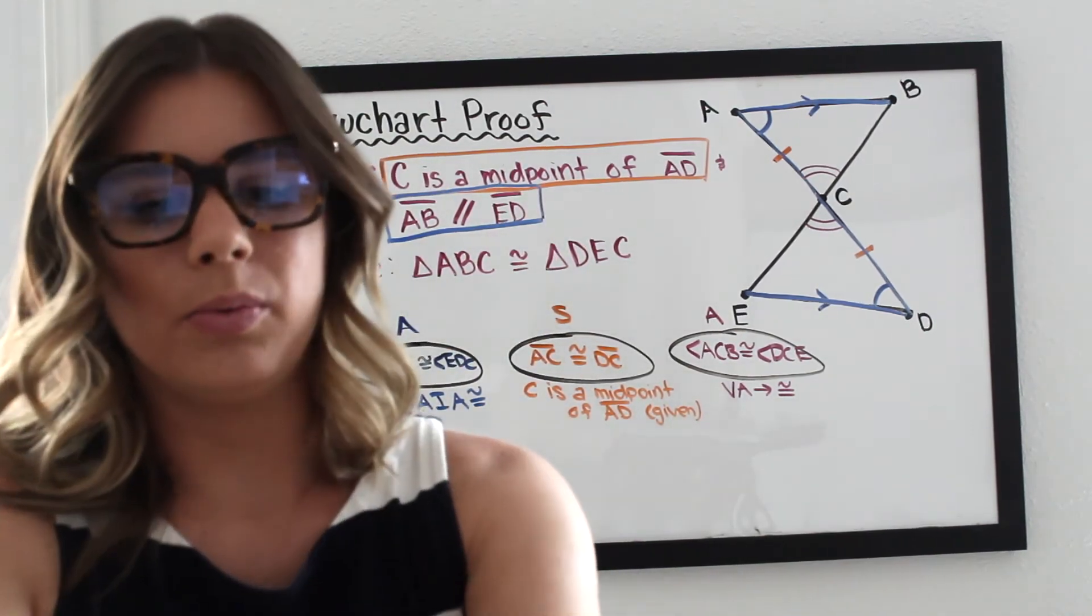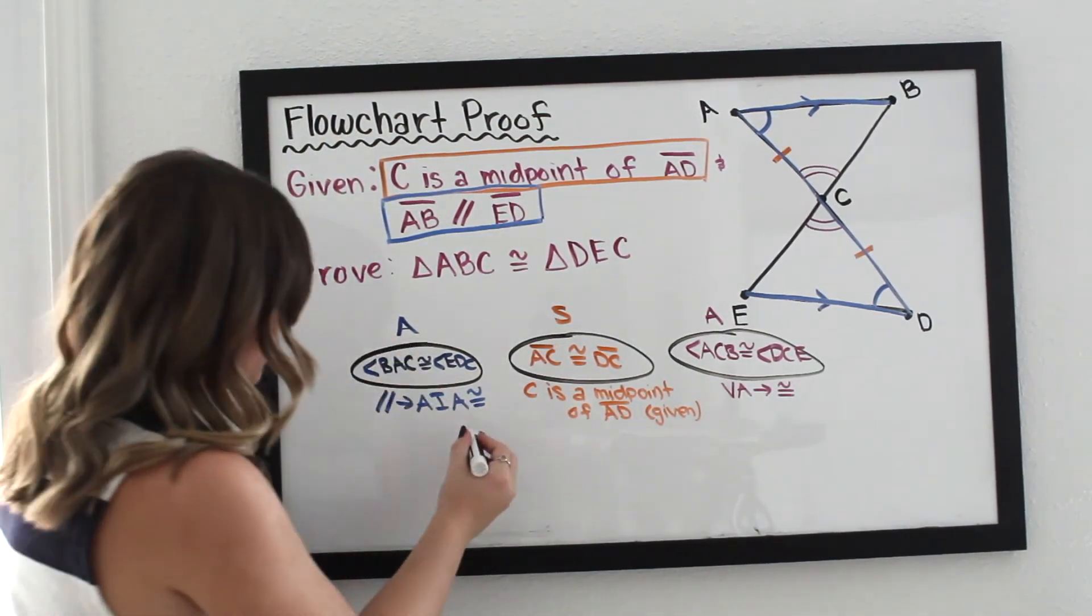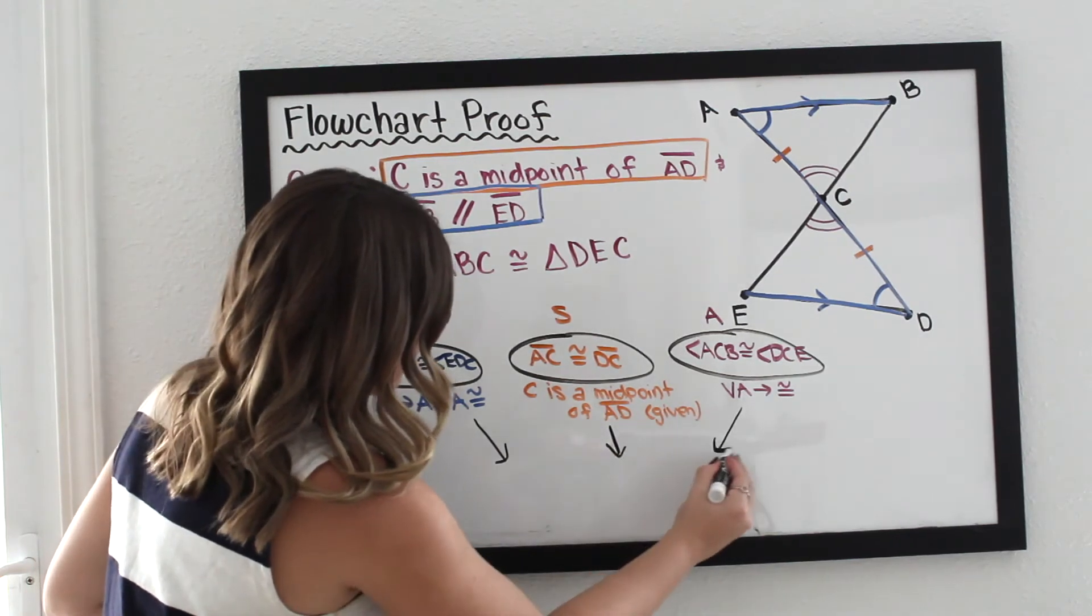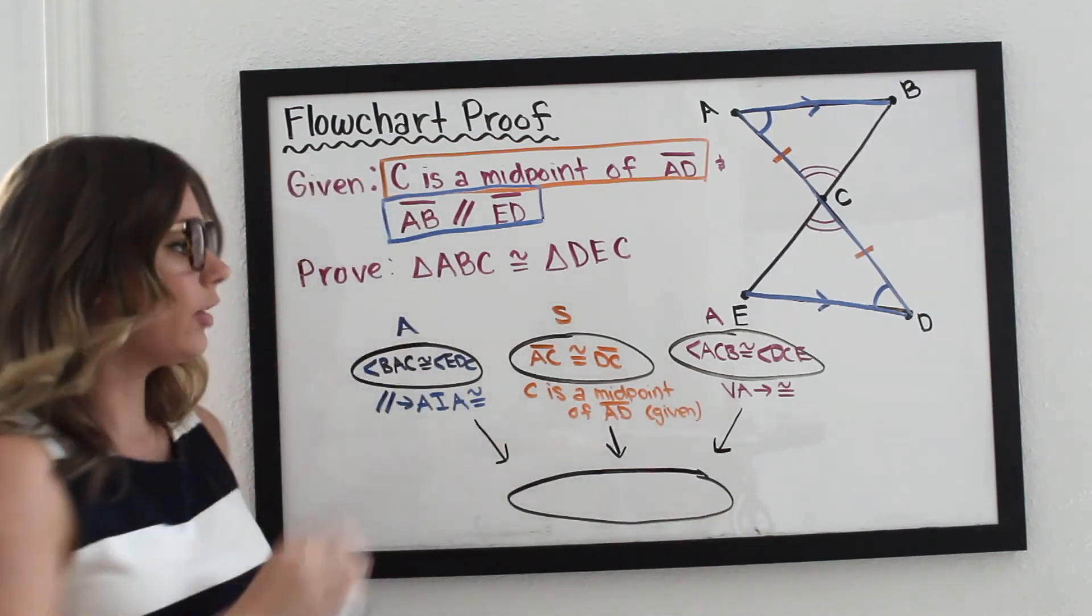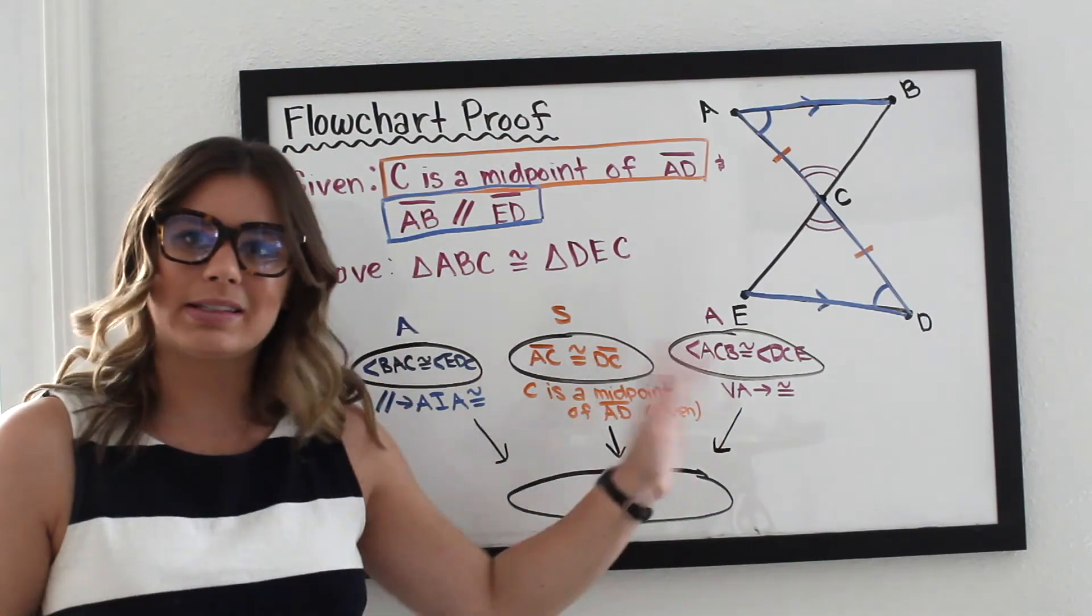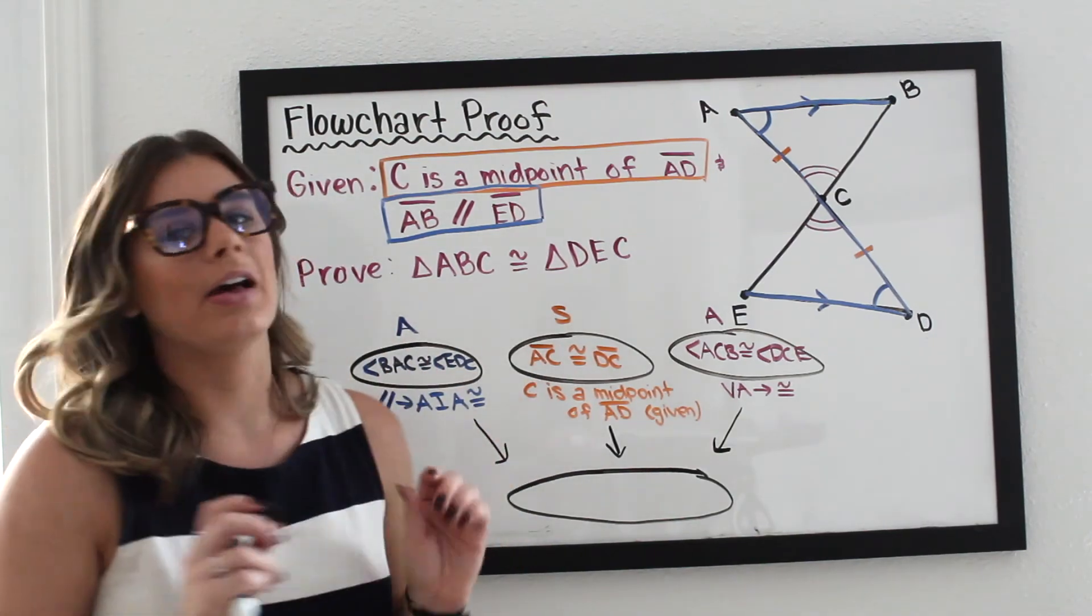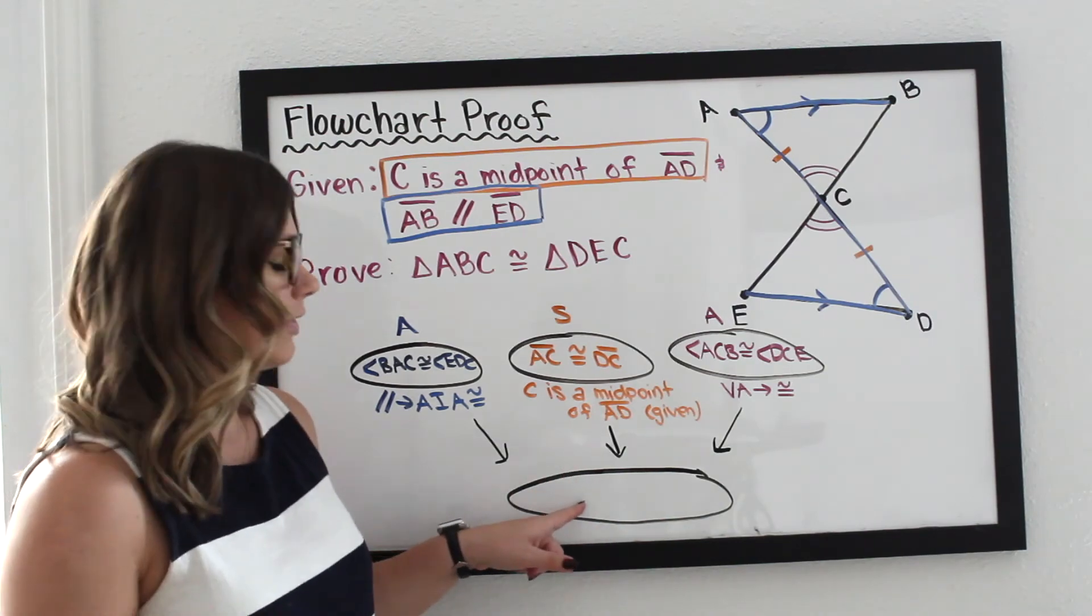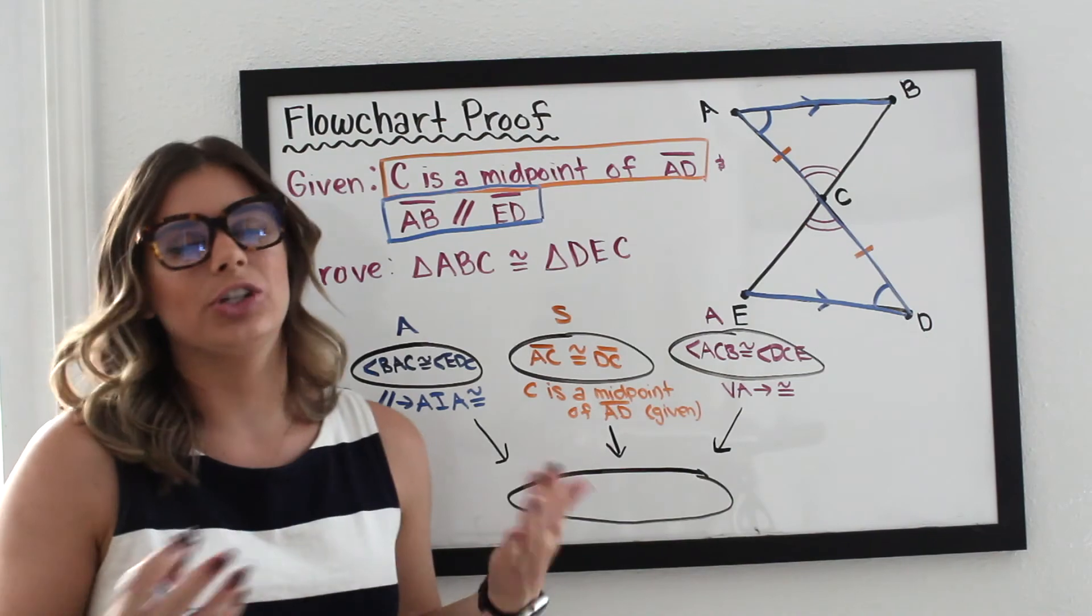Now, we need to do our last couple steps here. So these three bubbles are going to go to your final congruency statement down at the very bottom. And that's just telling your reader, well, hey, I've satisfied all my initial conditions of the ASA theorem to prove triangle congruence. Now I just need to tell my reader which triangles are congruent and state your reason, which would just be your theorem.